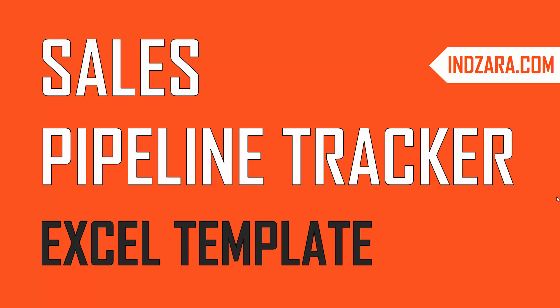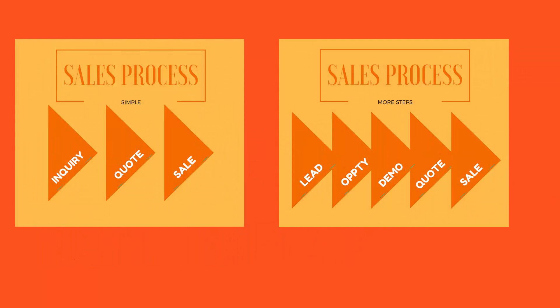Let's start with a definition of what a sales pipeline is. These are two examples of sales processes. On the left is a simpler process where a prospect — somebody who might be interested in your company's product but not a customer yet — reaches out with an inquiry, then you provide a quote, the prospect decides to purchase, and that becomes a sale. There could be many steps, like the example on the right.